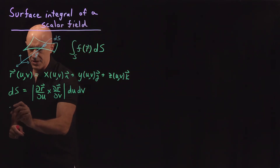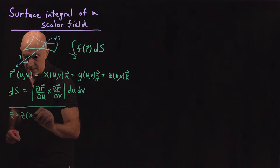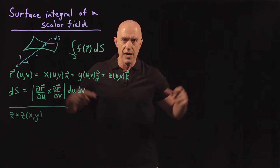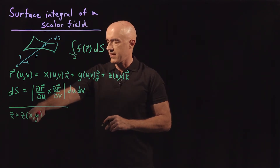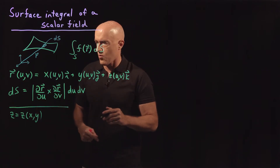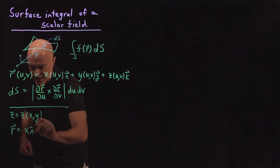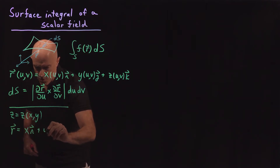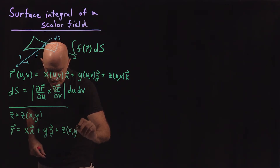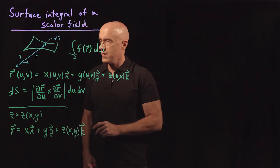Let's look at a particular case. What happens if z is a function of x and y? So we specify the surface above the xy plane, given by z as a function of x and y. Here our parameters, instead of u and v, will be x and y. So our r is going to be equal to x times the unit vector i plus y times the unit vector j plus z, which is a function of x and y, times the unit vector k. So that will locate a position on the surface.